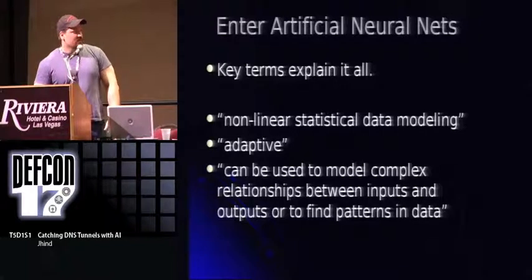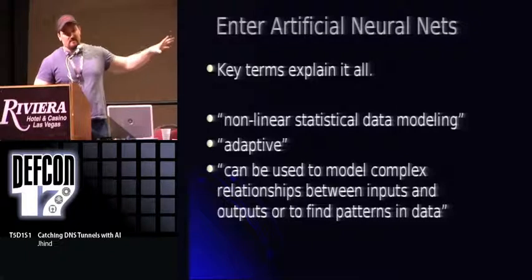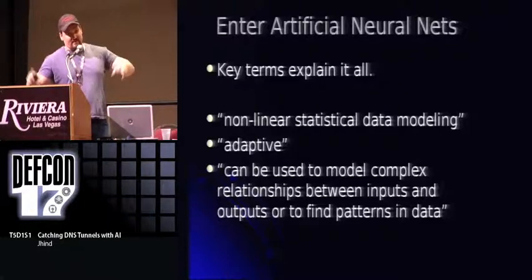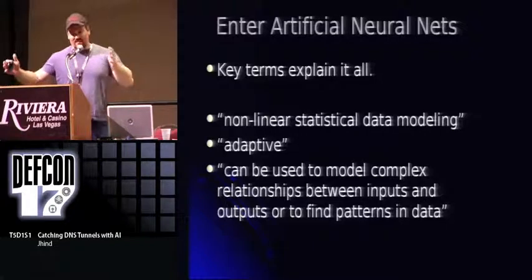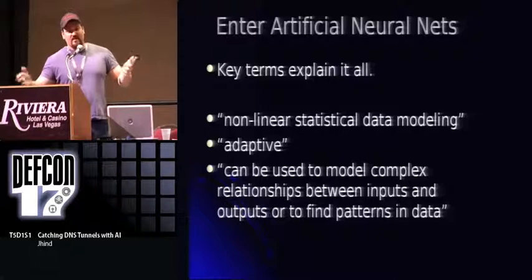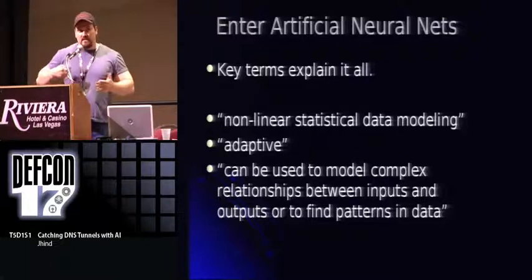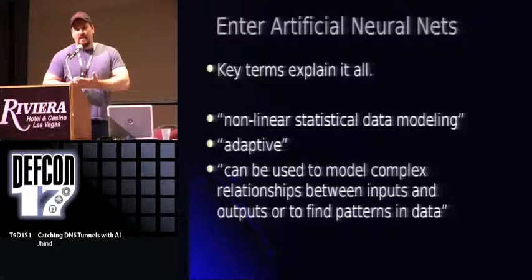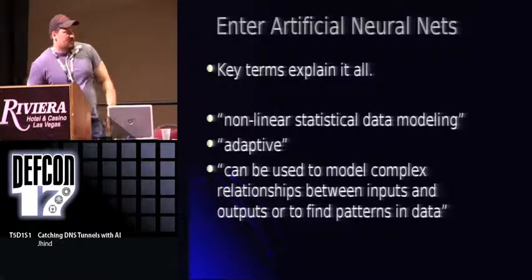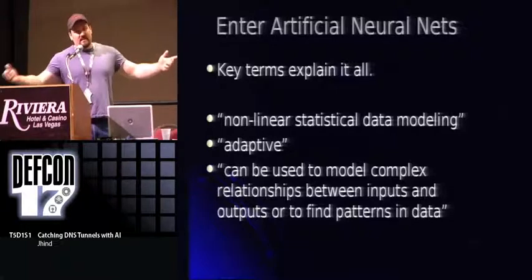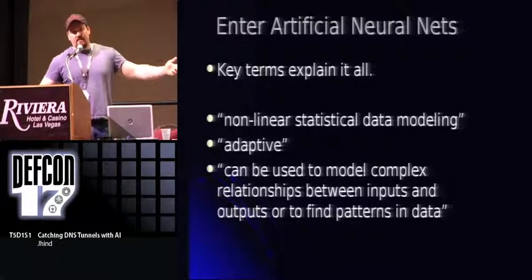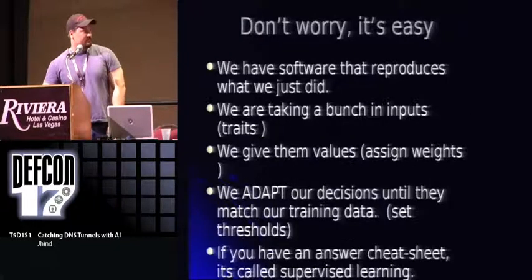Let's talk about neural nets for a minute. A few key terms: non-linear statistical data modeling — for our purposes, just think math, numbers. Data modeling: we're going to take something from real life and model it in math. Adaptive — this is really the point of the whole IDS project — it should learn. It makes a mistake, you can tell it that was a mistake, it should go back and not make the same mistake again. It can model concept relationships between inputs and outputs. Our inputs are going to be DNS packets; our outputs will be: I think this might be a DNS channel.